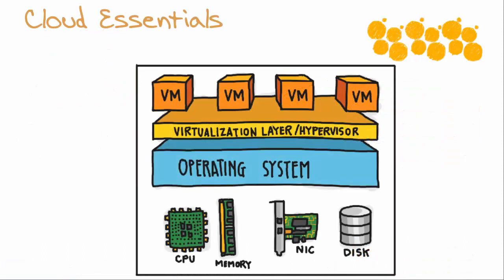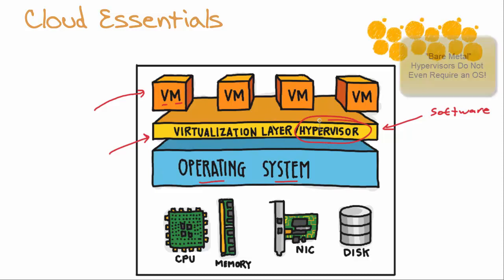Server virtualization refers to running our servers as virtual machines. There is going to be some software that makes this possible. In this example, the software is going to be an operating system, and then some layer of software sitting on top of that called the virtualization layer. A fancy term for this is a hypervisor. So it's software — both the OS and the hypervisor — sitting on top of hardware.